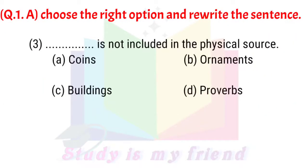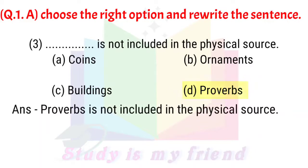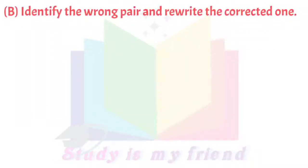Question 3: ___ is not included in the physical source. A. Coins, B. Ornaments, C. Buildings, D. Proverbs. Answer: Proverbs is not included in the physical source.